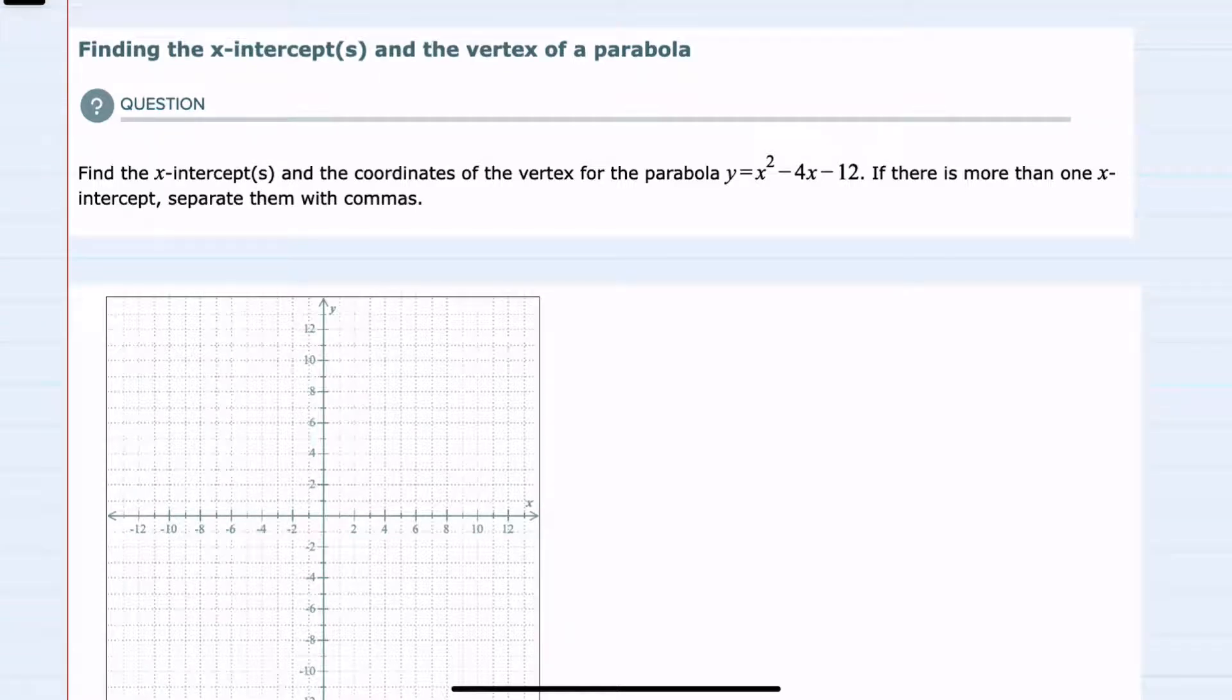In this video, I'll be helping you with the Alex problem type called finding the x-intercepts and the vertex of a parabola. We're finding the x-intercept and the coordinates of the vertex for the parabola y equals x squared minus 4x minus 12.